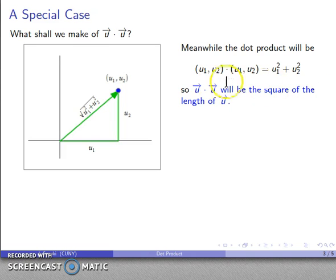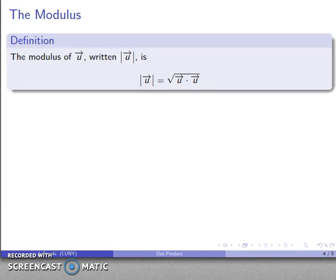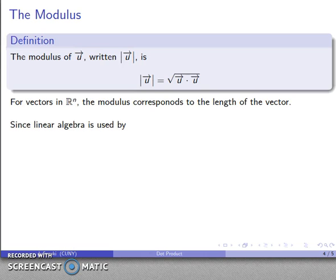So what does that tell me? Well, the dot product of u with itself is going to be the square of the length of this vector. And this introduces an important idea: the modulus of u. We write this as u with a set of vertical bars surrounding it. This is going to be the square root of the dot product. Now for vectors in Rn, the modulus corresponds to the length of the vector.